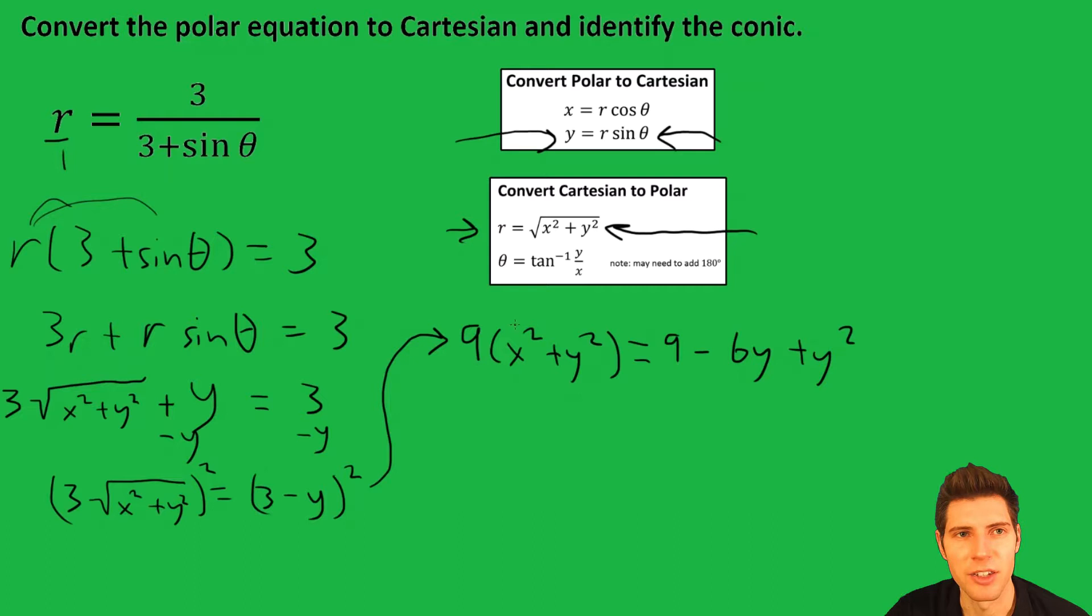Now distribute the 9 on this side. We have 9x squared plus 9y squared equals, and this is going to be, we can change the order of this, y squared minus 6y plus 9.